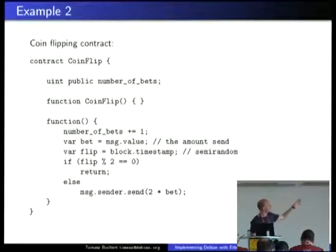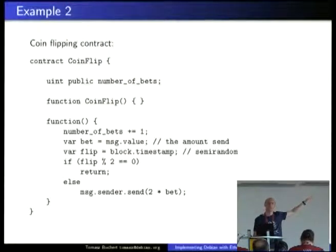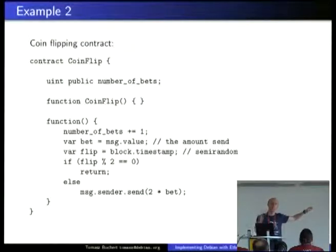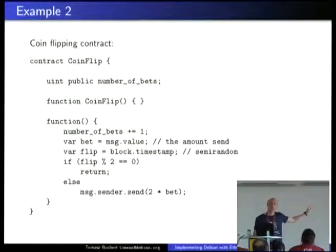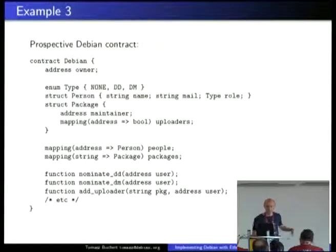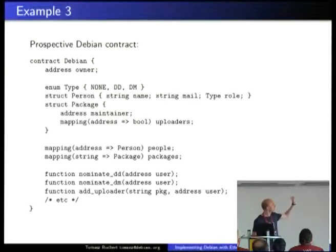There's another contract I made: a program where you can bet your Ether. You send money to this contract and it will flip a coin and give you two times more or zero — so basically it gives you zero on average. What I want to do with that is model the Debian democracy with Ethereum, and implement our interactions with it.